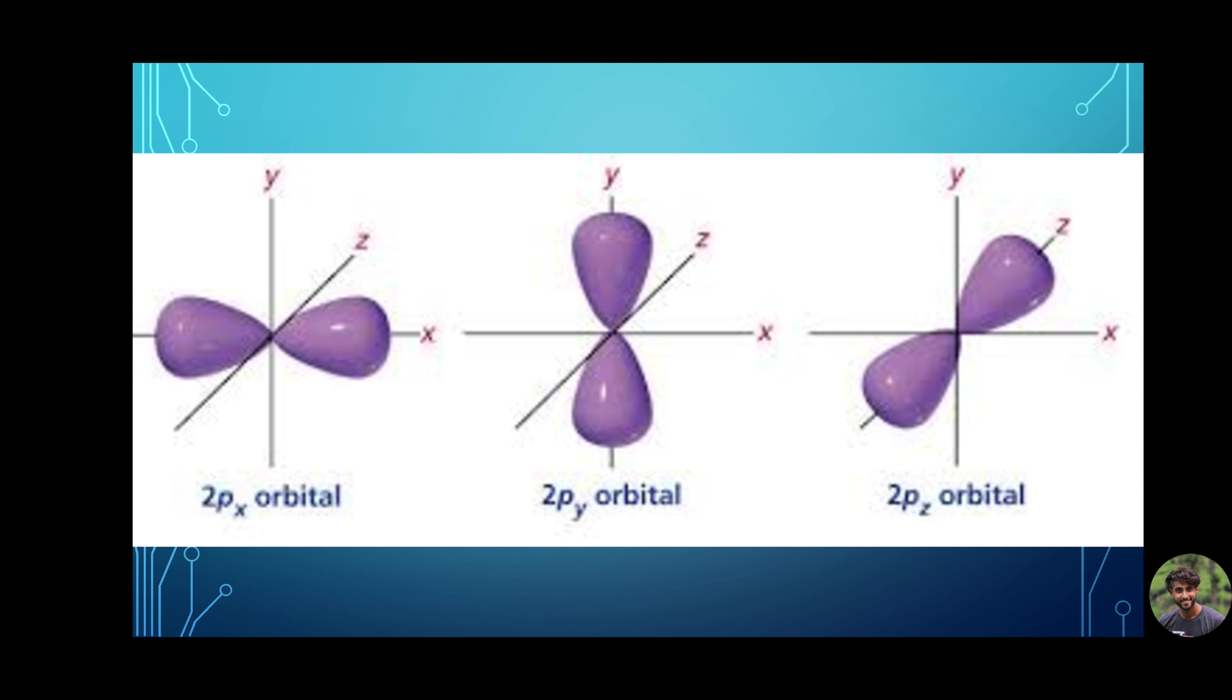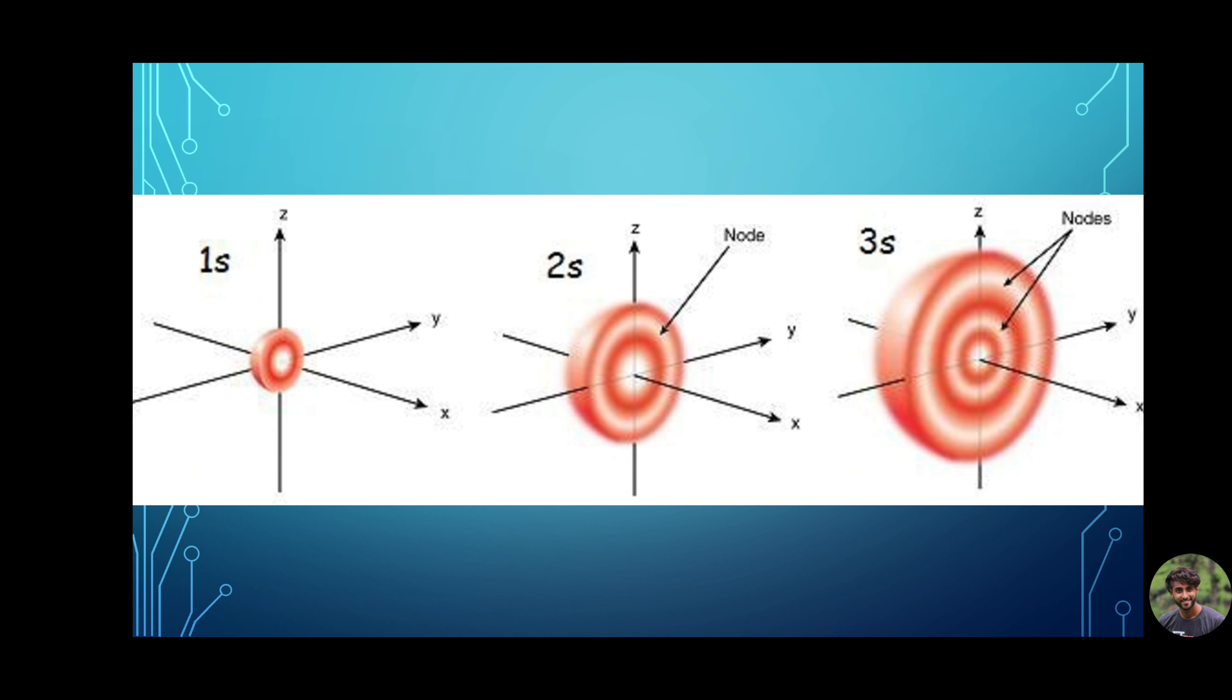P orbitals are dumbbell shaped in comparison to the spherical s orbital. This is how p orbitals look like. This is the representation of 2px, 2py and 2pz orbitals. This is how an s orbital looks like. This is the representation of 1s, 2s and 3s orbitals. The cavity between consecutive s orbitals is known as a node and the probability of finding an electron in a node is equal to 0.